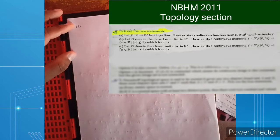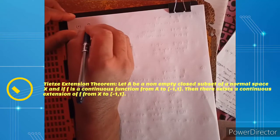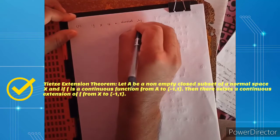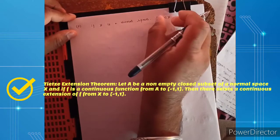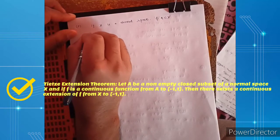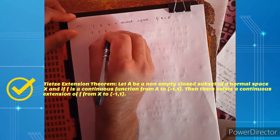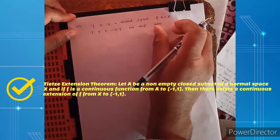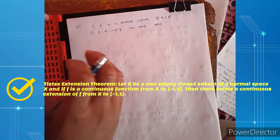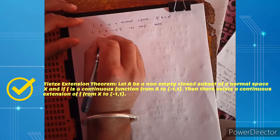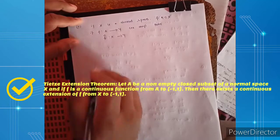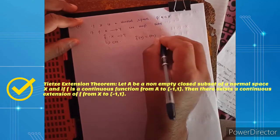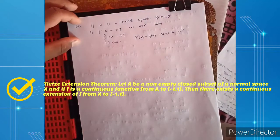The Tietze extension theorem says that if X is a normal space and A is any closed subset of X, and if f from this closed set to Y is any continuous map, then the Tietze extension theorem says we can extend f from X to Y and this extension will be continuous — that is, f̂(x) = f(x) for every x belonging to A.